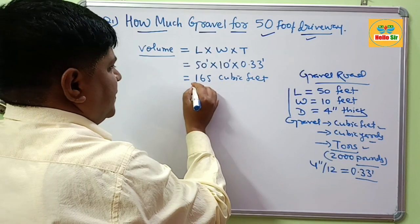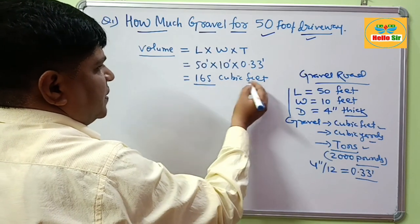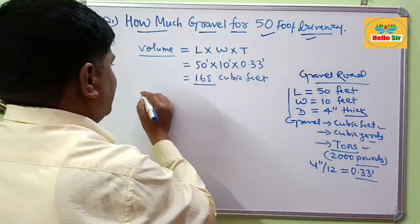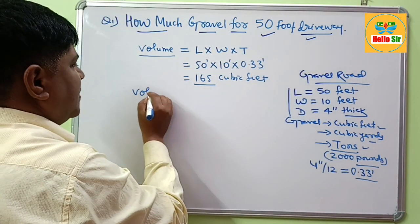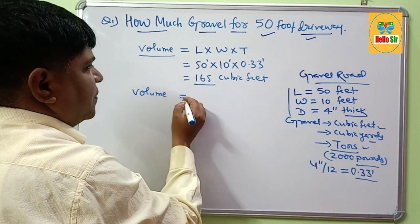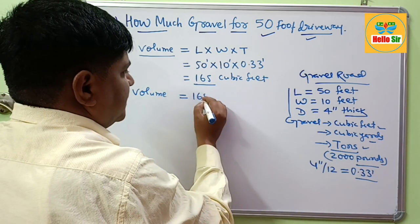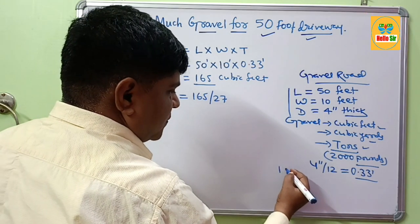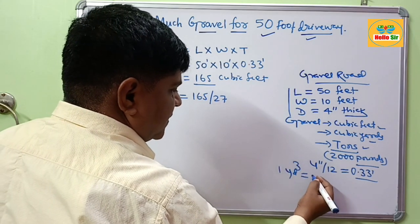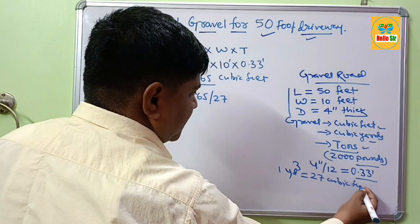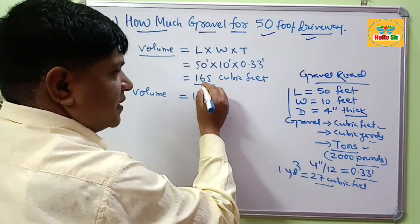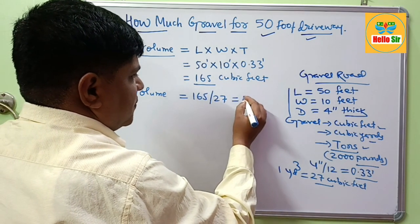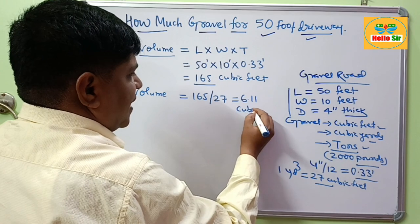Multiplying all three measurements gives 165 cubic feet. So you need about 165 cubic feet of gravel for a 50-foot driveway. If you want the quantity in cubic yards, divide by 27, because one cubic yard equals 27 cubic feet. So 165 divided by 27 gives about 6.11 cubic yards.